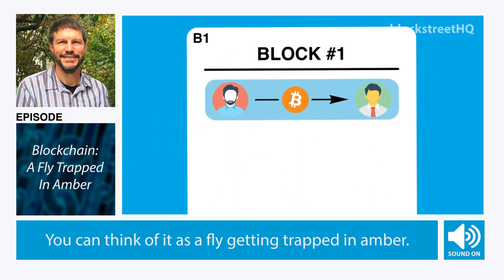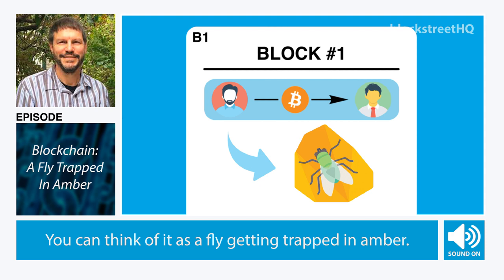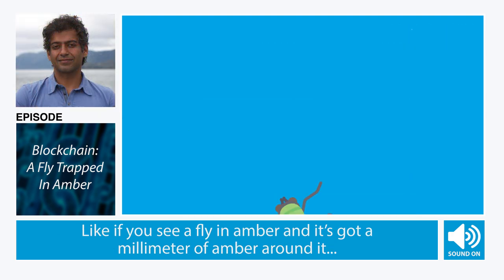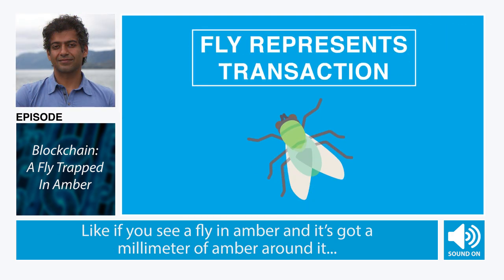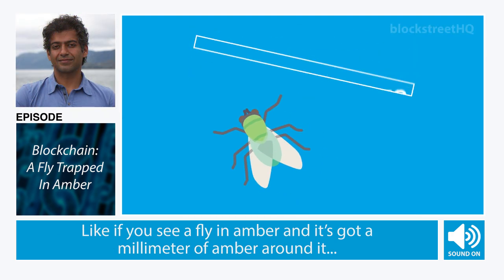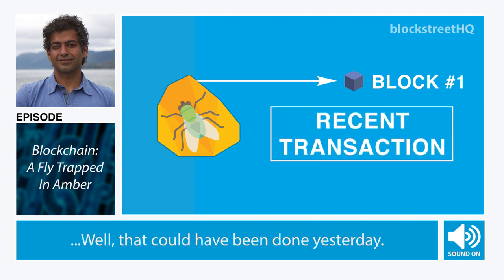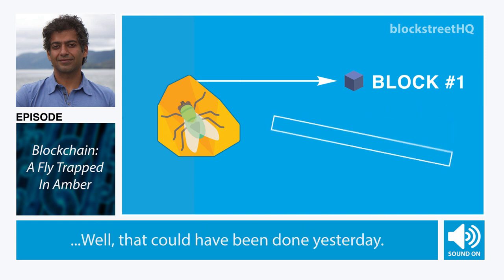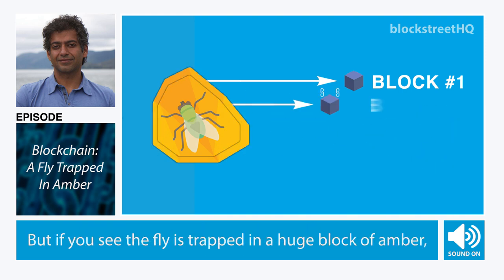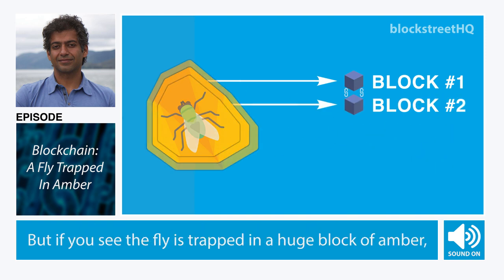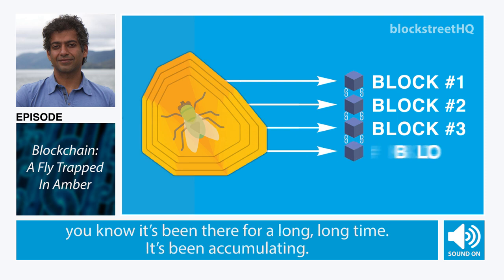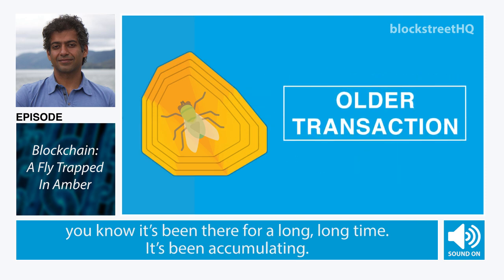You can think of it as a fly getting trapped in amber. If you see a fly in amber and it's got a millimeter of amber around it, that could have been done yesterday. But if you see the fly is trapped in a huge block of amber, you know it's been there for a long, long time.